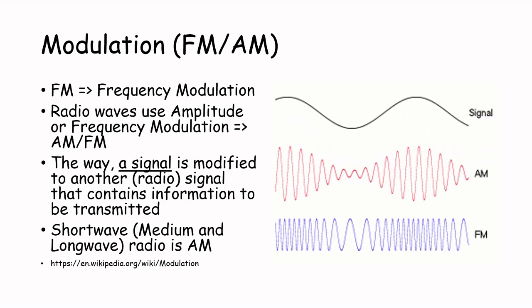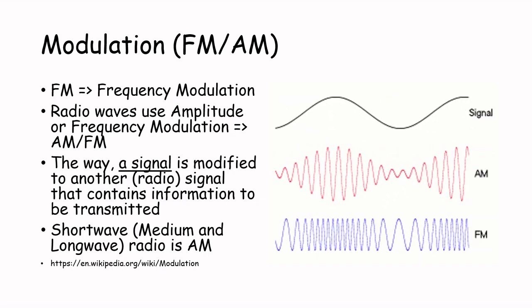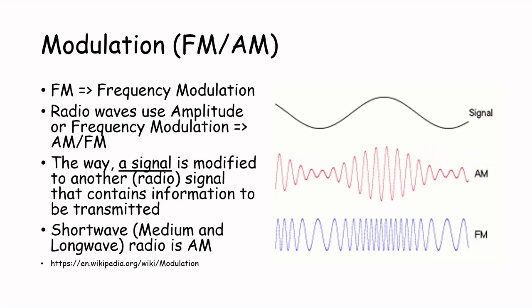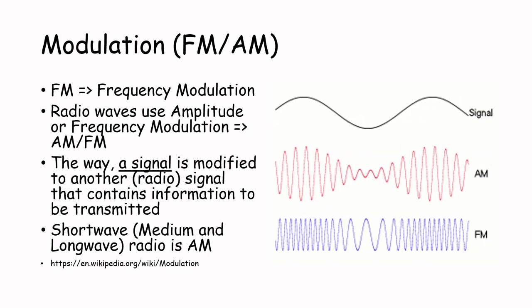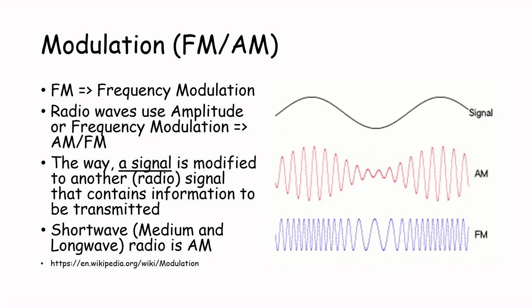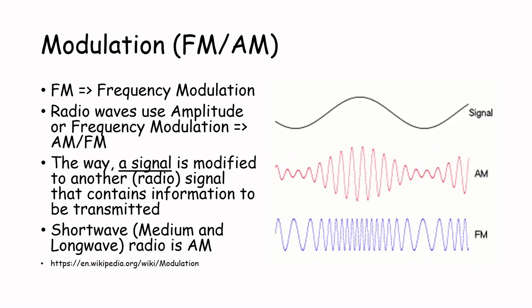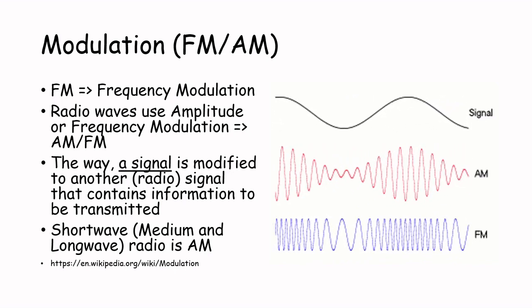Shortwave radio, just like medium or long wave, uses amplitude modulation, while the so-called very high frequencies or VHF are using frequency modulation. This is why we call this higher range FM radio.